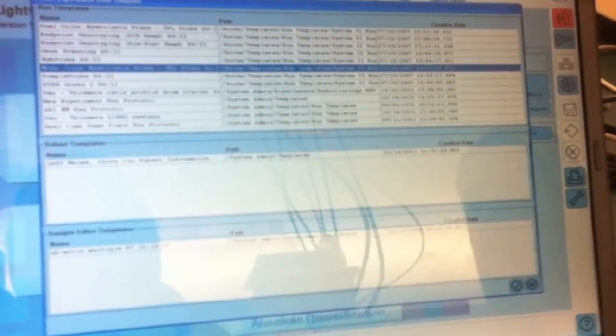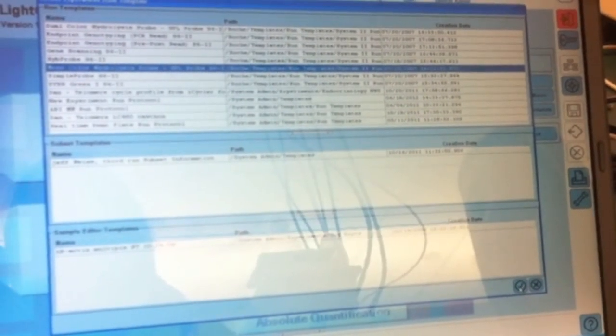Then, we'll select a new experiment from the template. We'll scroll down to our specific running protocol. In this case, we want monocolor hydrolysis probe. We'll click on the check box.